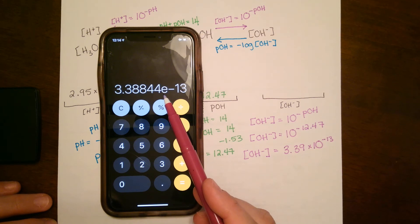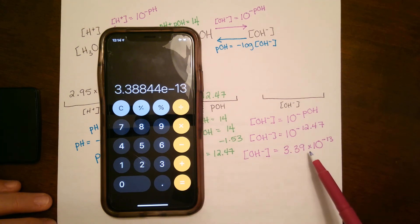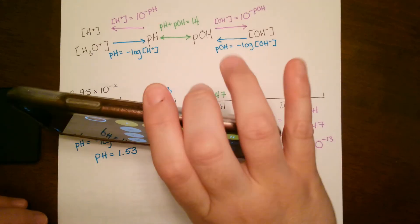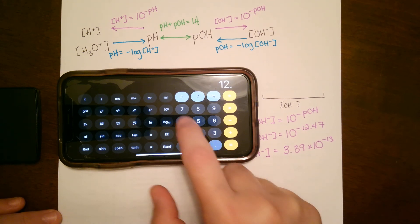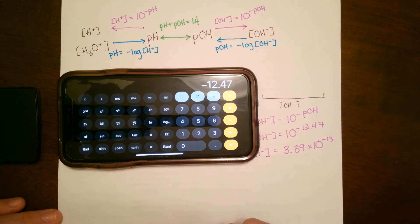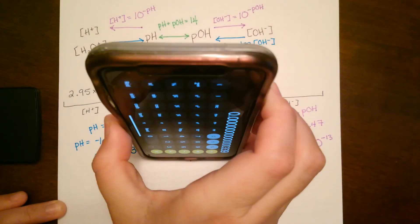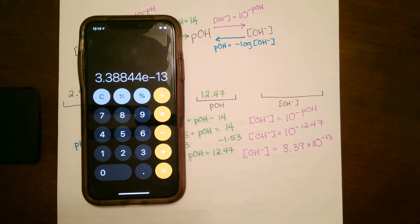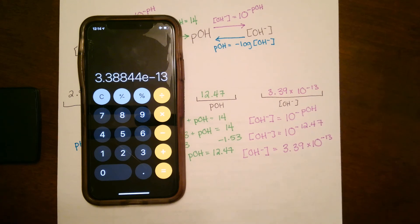So keep in mind that the E is times 10 to the. So if you just write 3.39 to the negative 13, that is not correct. It has to be times 10 to the negative 13. So let's do that one more time. So again, turn it horizontally. Type in that exponent first. So 12.47 negative. So negative 12.47. 10 to the power of that. And you get this number. You can either count out those zeros to get to 13, or you can turn your calculator vertically once again and it will give it to you in scientific notation. So I went out to two decimal places. If you want to go further than that, that's totally fine. But that is normally about where I go.